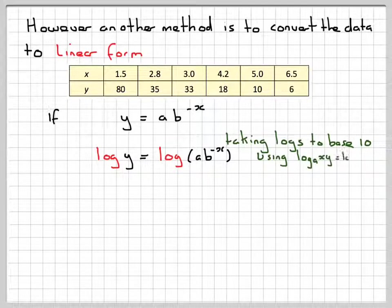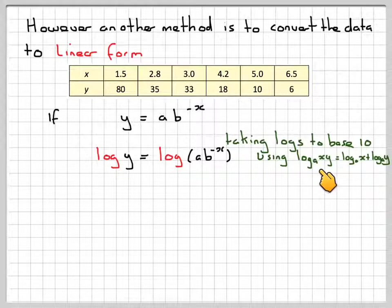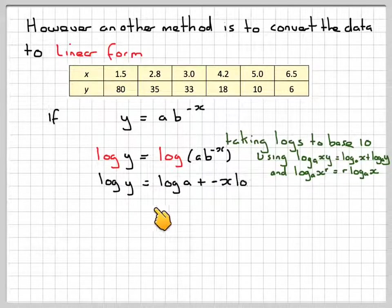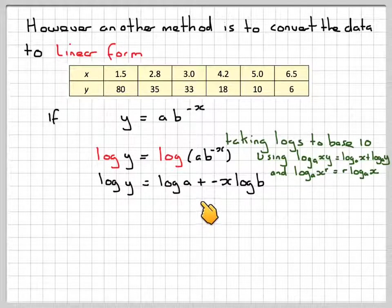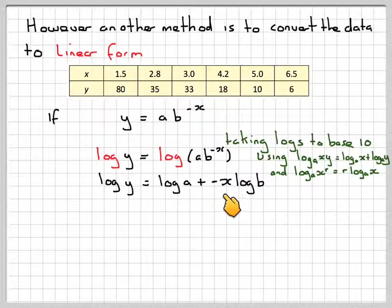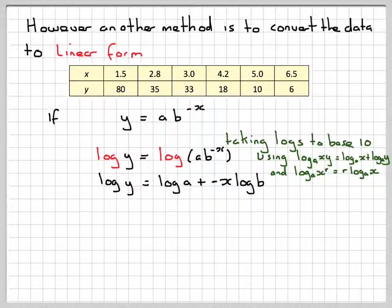There's a couple of rules of logarithms here that need to be used. Log a of xy equals log a of x plus log a of y. And log a of x to the r equals r log a of x. So we're going to have log of y equals log of a plus, that minus can come down in front of the logarithm, so minus x log b. I've applied these two rules here.